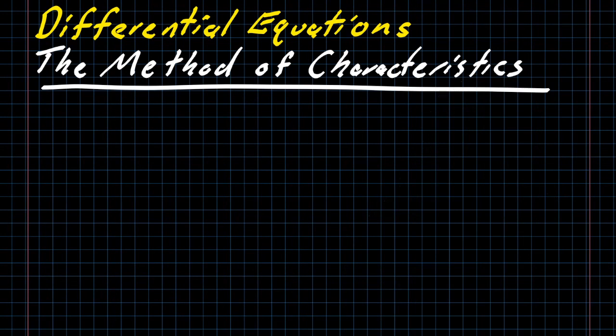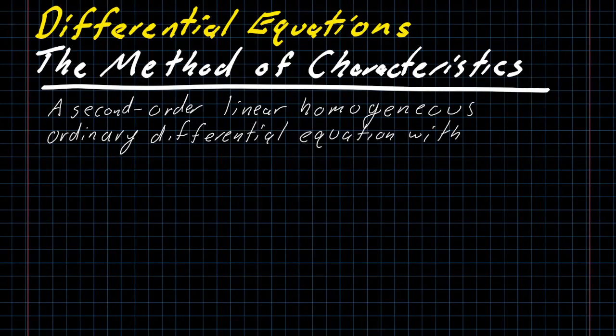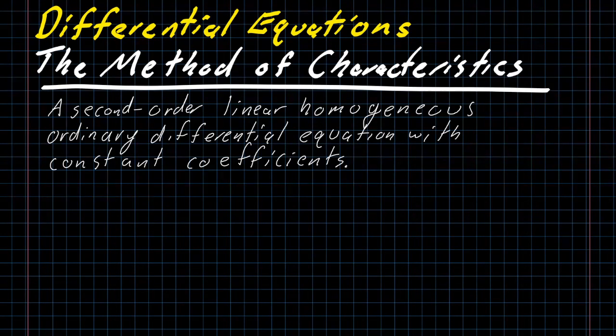The method of characteristics is a tool for solving a second-order, linear, homogeneous, ordinary differential equation with constant coefficients. Or, technically speaking, we can use this same process for third-order, fourth-order, or any higher-order differential equation. We're going to stick mostly to second-order, linear, homogeneous, ordinary differential equations with constant coefficients.